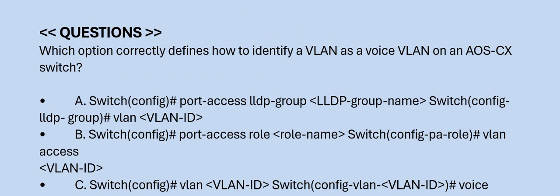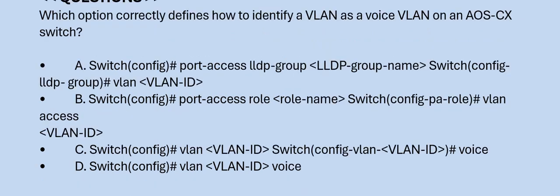Next question: Which option correctly defines how to identify a VLAN as a voice VLAN on the AOS-CX switch? Please have a look at the options. The correct answer is Option C.